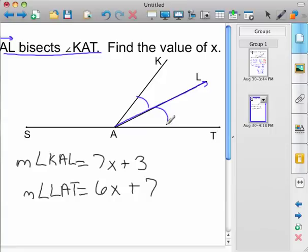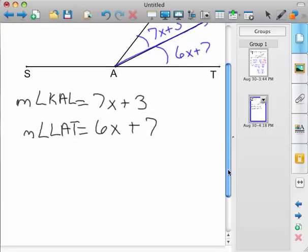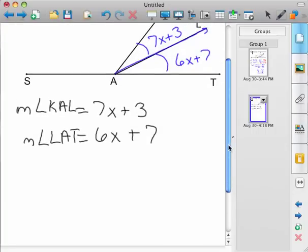And down below it gives us that angle KAL is 7X plus 3, and angle LAT is 6X plus 7. So there's the given information. Since we know those are both equal, we know that 7X plus 3 is going to equal 6X plus 7. We can set up the algebraic equation.